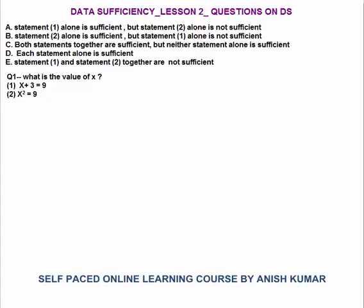In DS, each question will be followed by two statements: Statement 1 and 2. You need to tell which of the following statements is sufficient to answer the question. If you are getting the answer from statement 1 only, not from 2, your answer choice would be A. If you are getting the answer from 2 alone but not from 1, your answer choice will be B. If both statements together are required to answer the question, your answer choice will be C. When each statement alone individually is sufficient to answer the question, your answer choice will be D. And when both statements together are not sufficient to answer the question, your answer choice will be E.